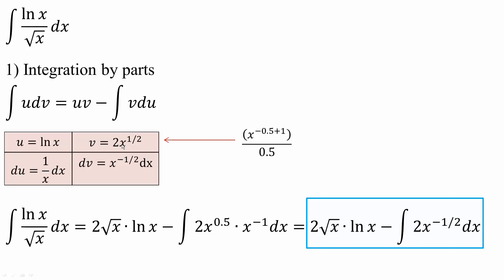So I have 2 times x raised to 0.5 times x raised to negative 1 dx. And this right here will equal 2 square root of x times ln x minus the integral 2x raised to negative 1 half dx because negative 1 plus 0.5 is negative 1 half.